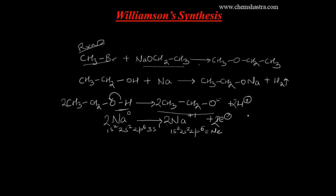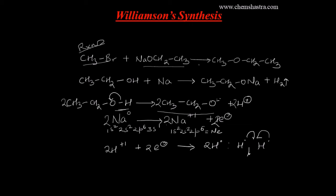We also need to understand how the byproduct forms. We have 2 H⁺ ions in the system. These two hydrogen atoms in the +1 oxidation state accept 2 electrons to generate 2 hydrogen radicals. These 2 hydrogen radicals then combine through bond formation to give hydrogen gas — H₂ — in the gaseous state as a byproduct.